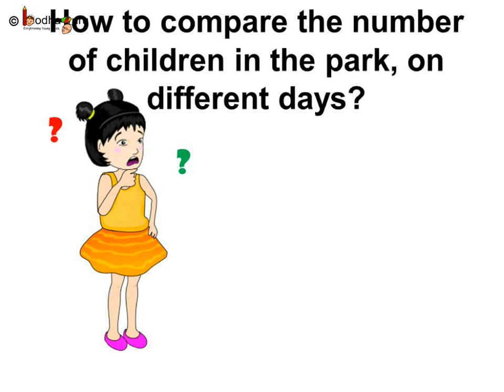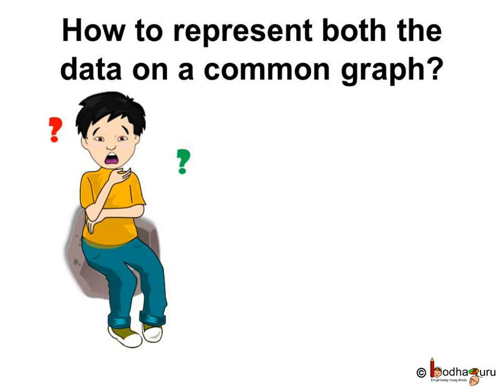If we wish to compare the data for two days, how do we compare the number of children in the park on different days? Is it possible to represent the data of both days on a common graph? This way it will be easy to see and also to compare. Bar graphs or bar charts can also have double bars. Let's use double bars to show the number of children at different times on Saturday and Sunday on the same chart.